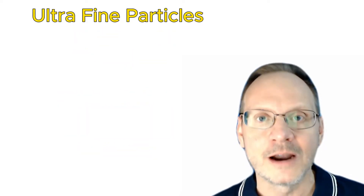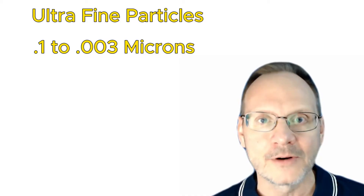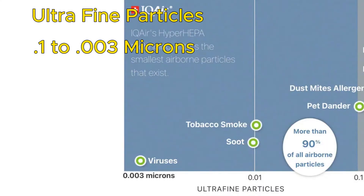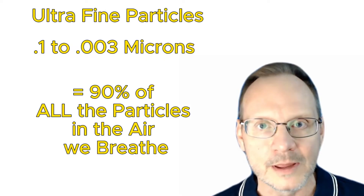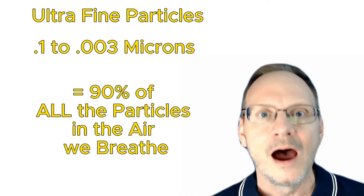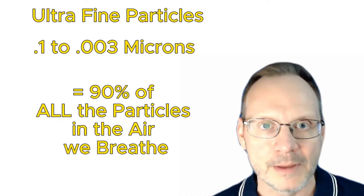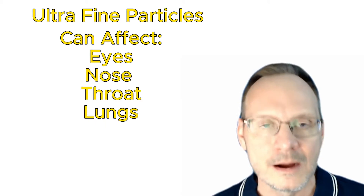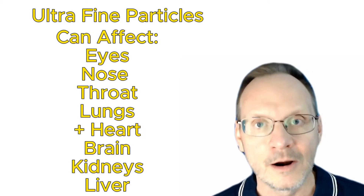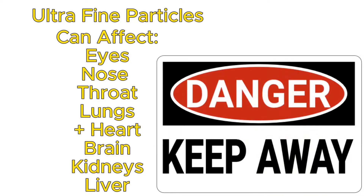The third category of particles are called ultra-fine particles, and they are 0.1 microns to 0.003 microns in size. Examples include pet dander, tobacco smoke, and viruses. Ultra-fine particles comprise about 90% of all the airborne particles in the air that we breathe. The overwhelming vast majority of particles in the air are super small — small enough to pass through our lung tissue into our bloodstream. They can affect our eyes, nose, throat, and lungs, and they can also affect our heart, brain, kidneys, and liver. These ultra-fine particles are the most dangerous particles for humans.